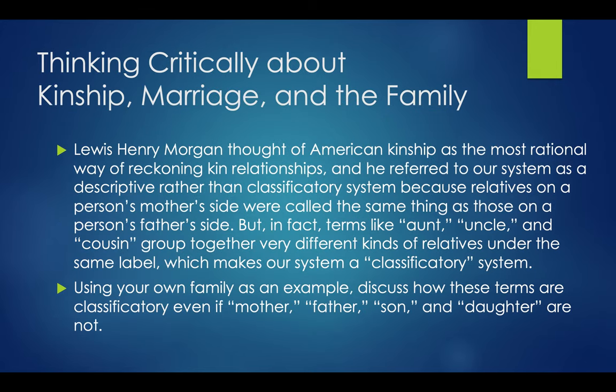For thinking critically about kinship, marriage, and the family: Lewis Henry Morgan thought of American kinship as the most rational way of reckoning kin relationships, calling it descriptive rather than classificatory because relatives on a person's mother's side were called the same as those on the father's side. But in fact, terms like aunt, uncle, and cousin group together very different kinds of relatives under the same label, meaning our system really is a classificatory system.